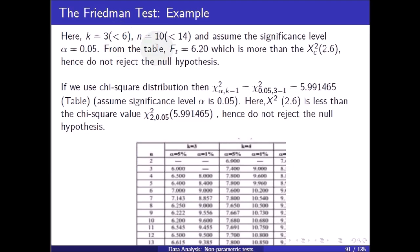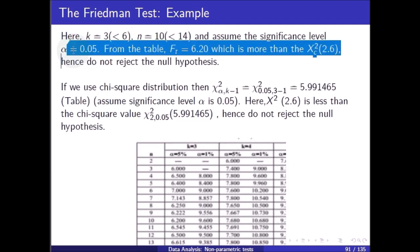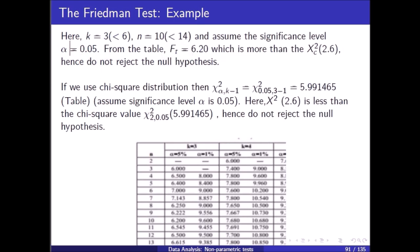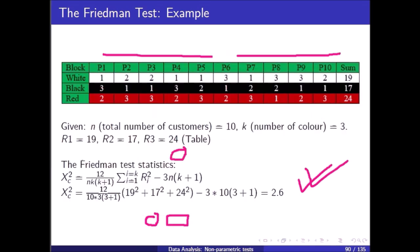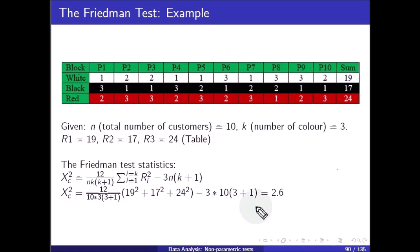Here k = 3 and n = 10, and assume the significance level is 5%, so α = 0.05. From the Friedman table, with n = 10 and significance level 5%, the critical value is 6.20. Since 6.20 is greater than the calculated value of 2.6, we do not reject the null hypothesis.